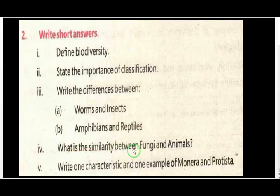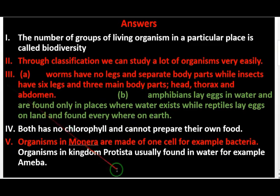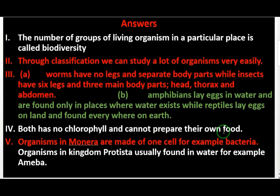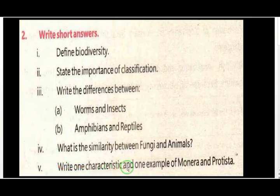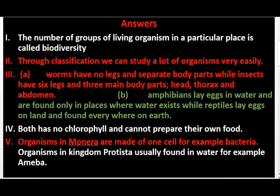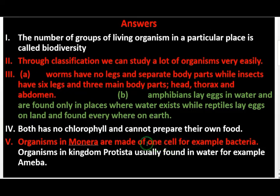What is the similarity between fungi and animals? Both have no chlorophyll and cannot prepare their own food. Organisms in kingdom Monera are made of one cell — for example, bacteria. Organisms in kingdom Protista are usually found in water — for example, amoeba.